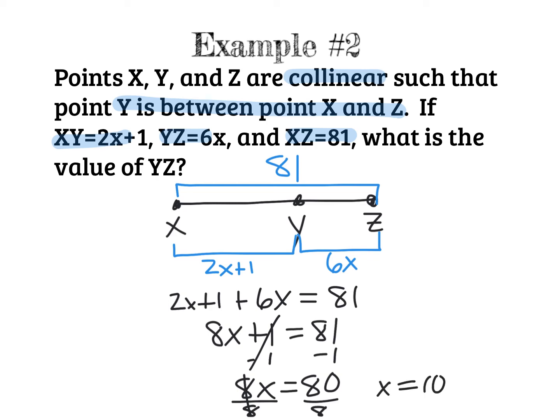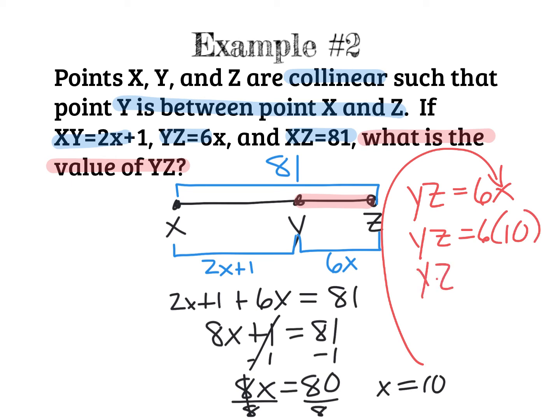Now, I know you did a lot of steps here. But notice, always go back to the question. What is the question asking? Because the question here is not asking for what is X, but what is the value of YZ? So I have to go back and find this length, YZ. Now, I know that YZ equals 6X. So I'm going to plug the value of X into my equation. And I get YZ equals 6 times X, which is 10. If I simplify, 6 times 10 is 60. That's what I'm looking for.